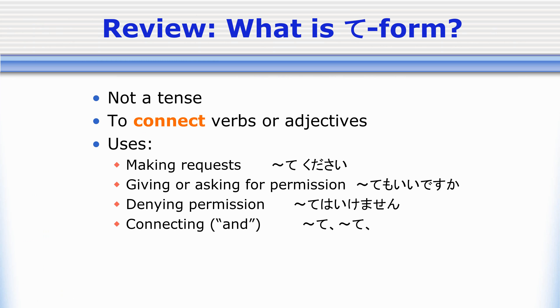Today I'm going to introduce a little bit more about the te-form. Just a reminder about how we use the te-form — it's not actually a tense, so it doesn't really change the meaning of the verb itself. Instead, it's a connector that we use to put together verbs and adjectives. In Japanese, we can't just use a particle like と the way we can with a noun. Instead, we have to change the conjugation of the verb or adjective itself. We'll talk about adjectives in 1020, but right now we're going to talk about how to change the verb into te-form to use it to connect it to things.